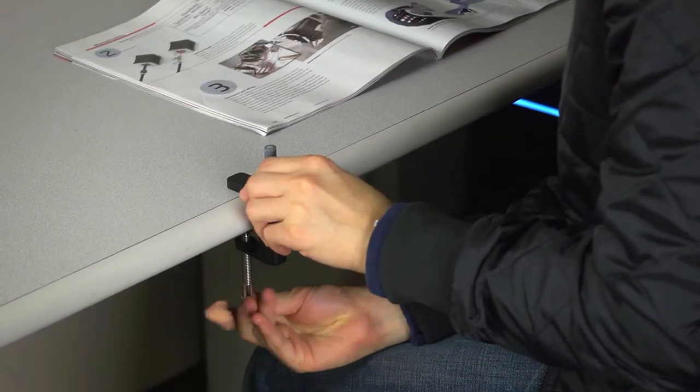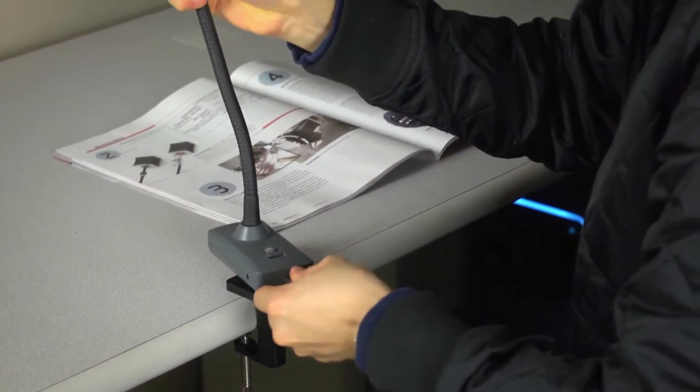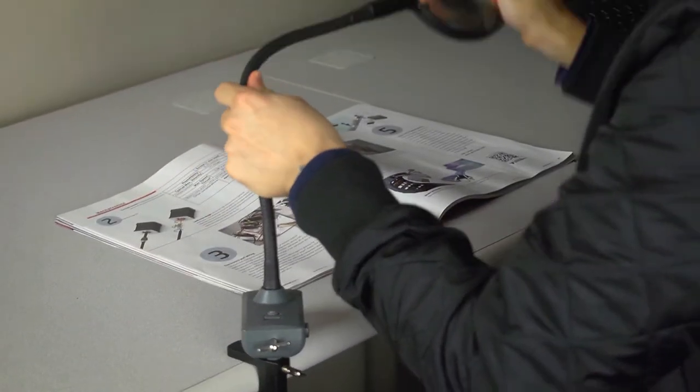The included C clamp attaches right to your desk or table and then you add the Magnaflex. Tighten the Magnaflex to the C clamp and adjust the neck to your preference.